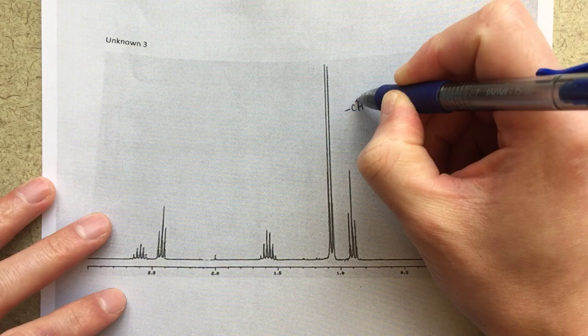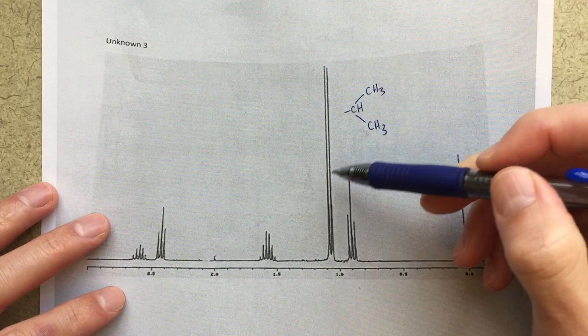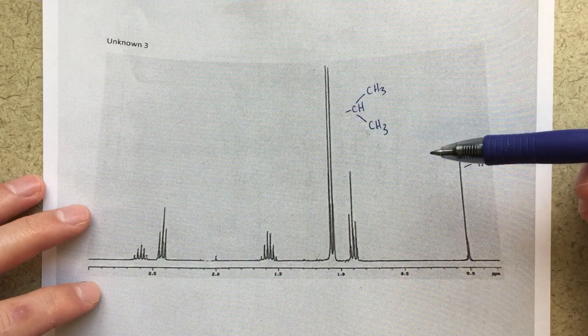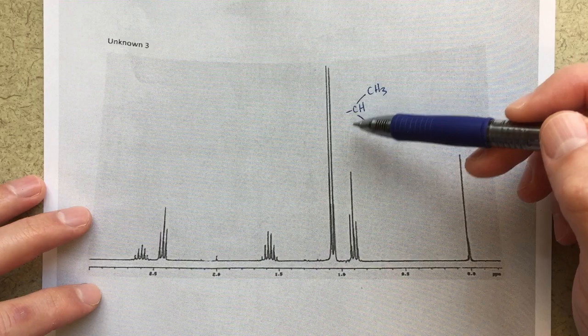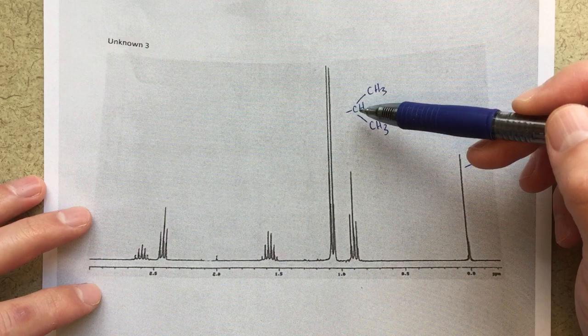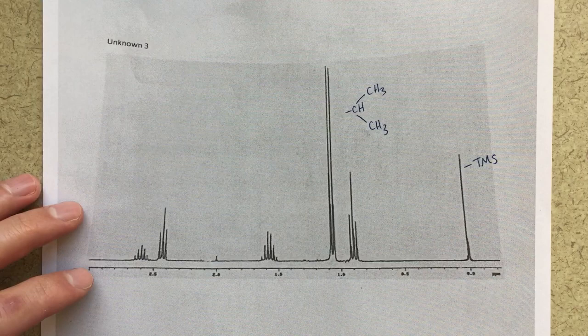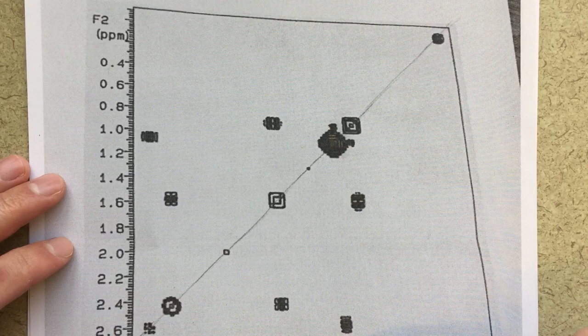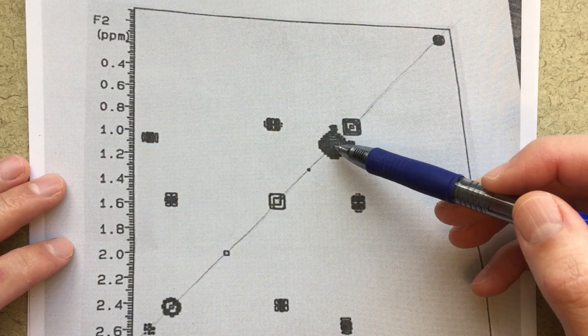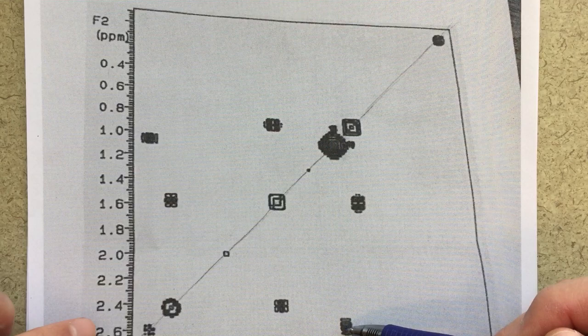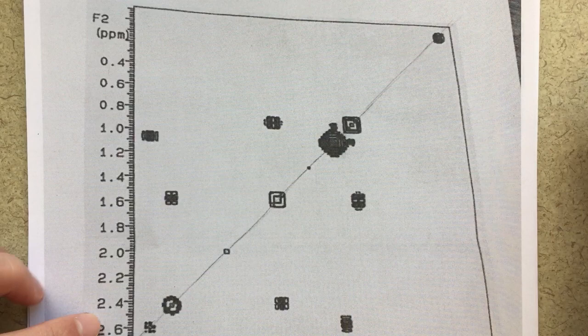The first thing that really jumps out is this big doublet. Anytime we see a big doublet like this, to me that right away indicates an isopropyl group. To have a big doublet I need a lot of protons in the same environment being split by just one proton. This is a really common motif — a large signal integrating to six, split into a doublet by the one proton on the linker. That's what I'd guess is giving us this peak at about 1.1.